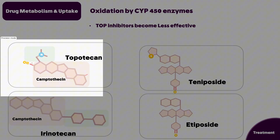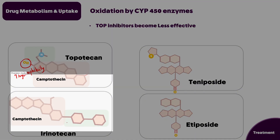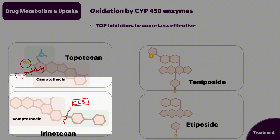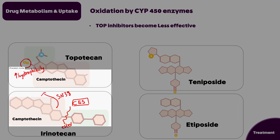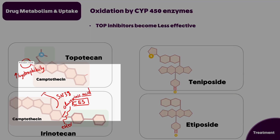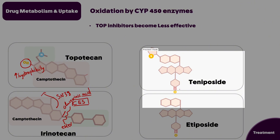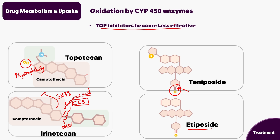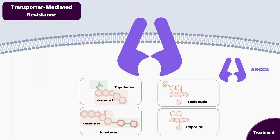For liver metabolism: topotecan can acquire an additional hydroxyl group that increases its hydrophilicity. Irinotecan gets hydrolyzed by carboxylesterase enzymes in the liver, breaking the ester bond and releasing SN-38; however, SN-38 can be deactivated by the addition of glucuronic acid. For topo 2 inhibitors, teniposide can be oxidized by conversion of a hydroxyl group to a ketone group — the same occurs for etoposide — making these topo inhibitors less effective.